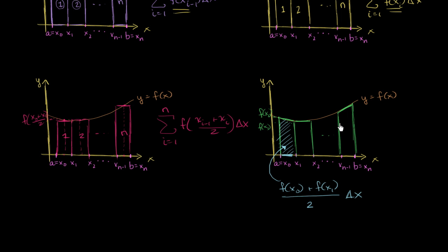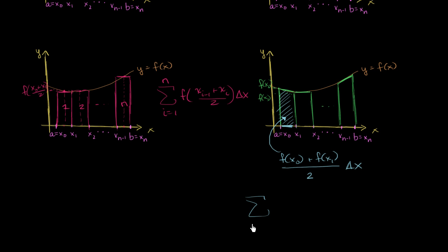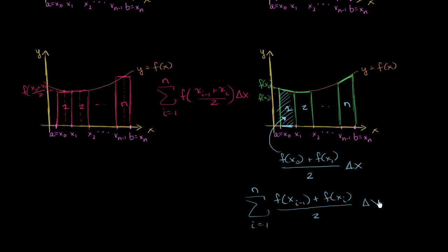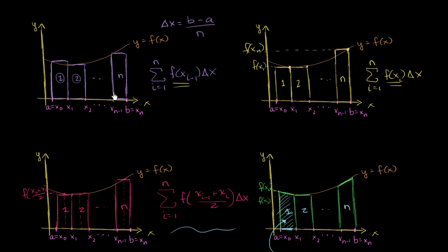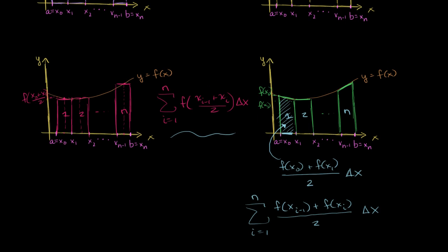If we want the sum of all the trapezoid areas in general terms, we sum from i equals 1 to n. The height of each trapezoid uses the average of the function at the left boundary x sub i minus 1 and the function at the right boundary x sub i, all over 2, times delta x. The whole point is to show there are multiple ways to do this. In your calculus or pre-calculus book you may see fancy notation, but all it's doing is summing areas of rectangles or trapezoids — using the right boundary, left boundary, midpoint, or trapezoid construction.